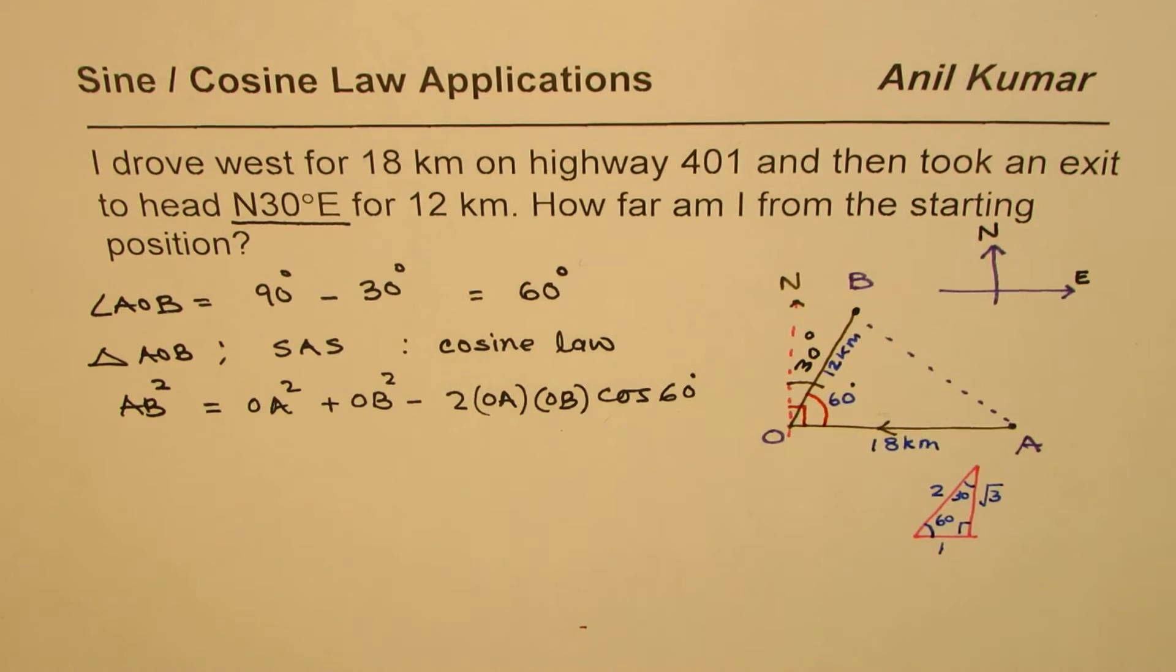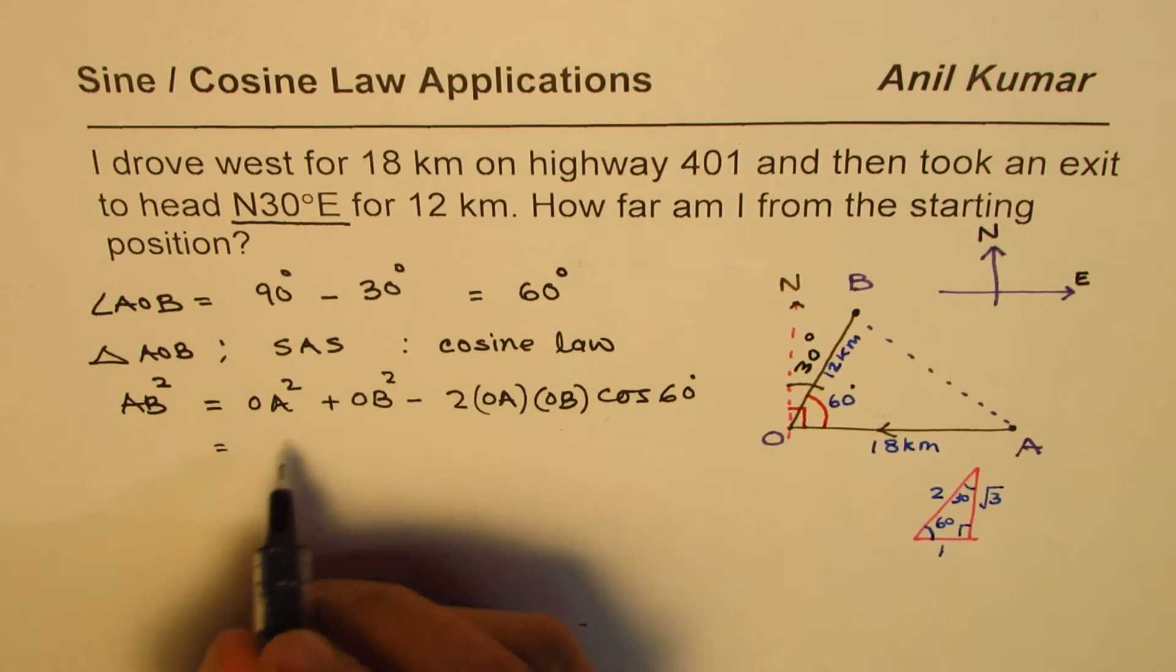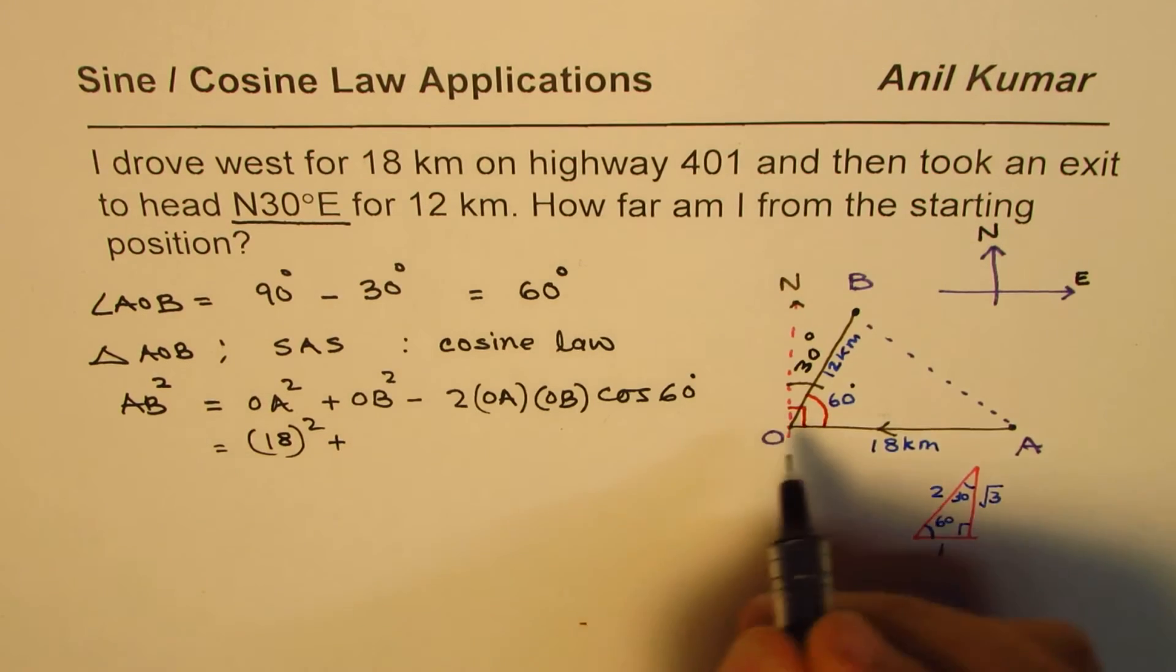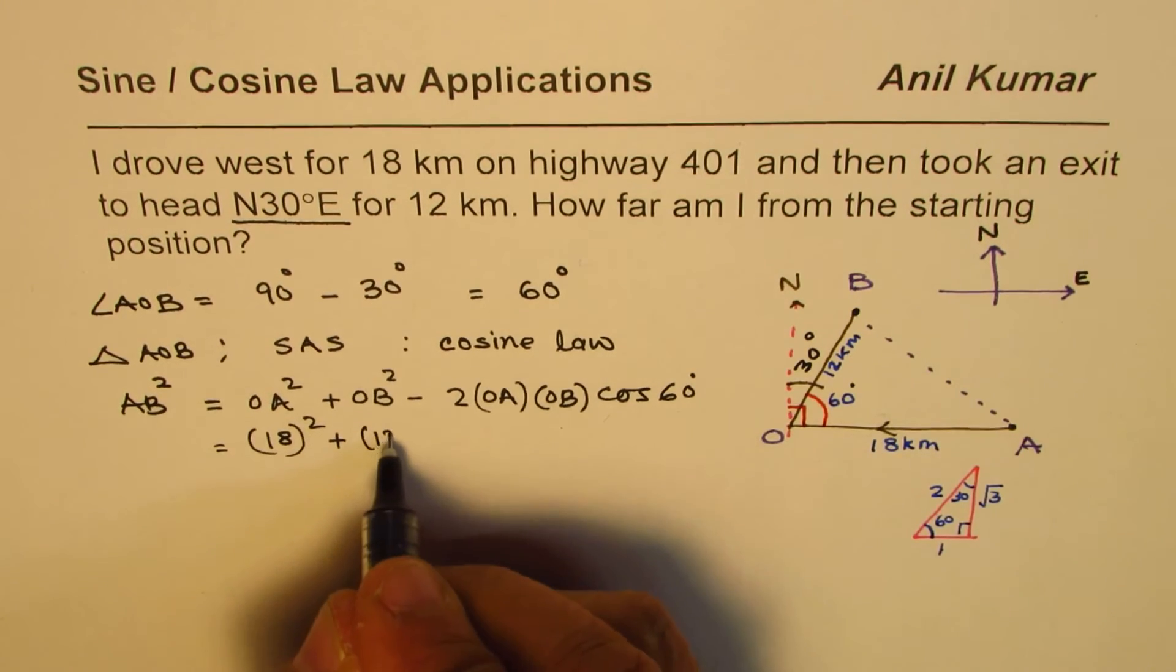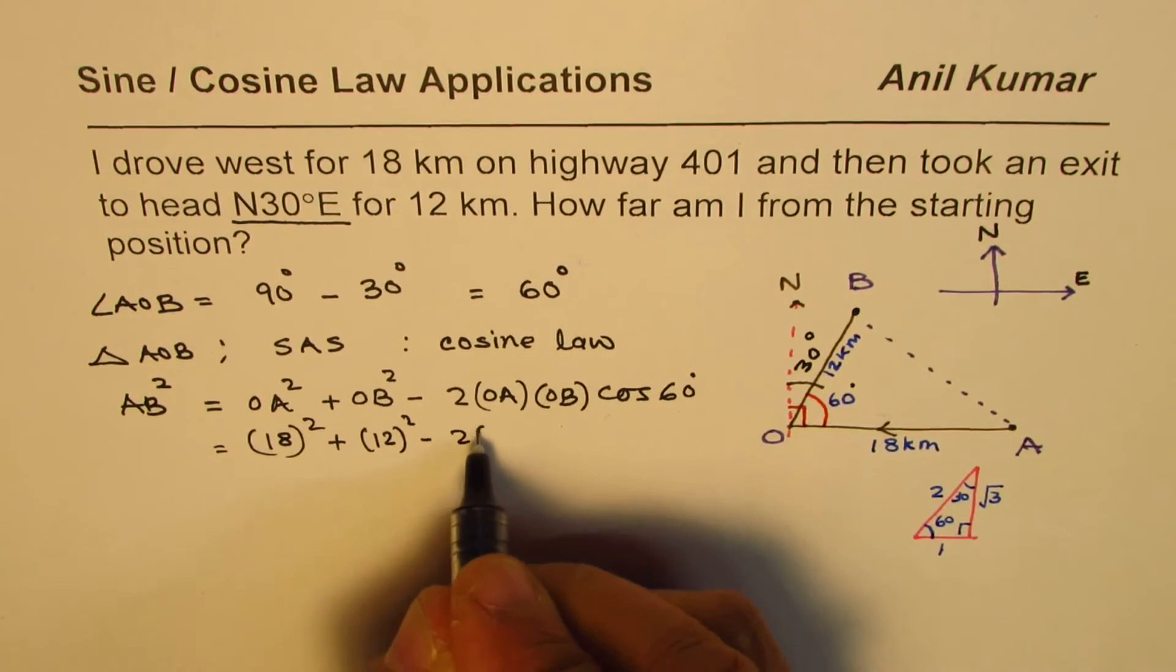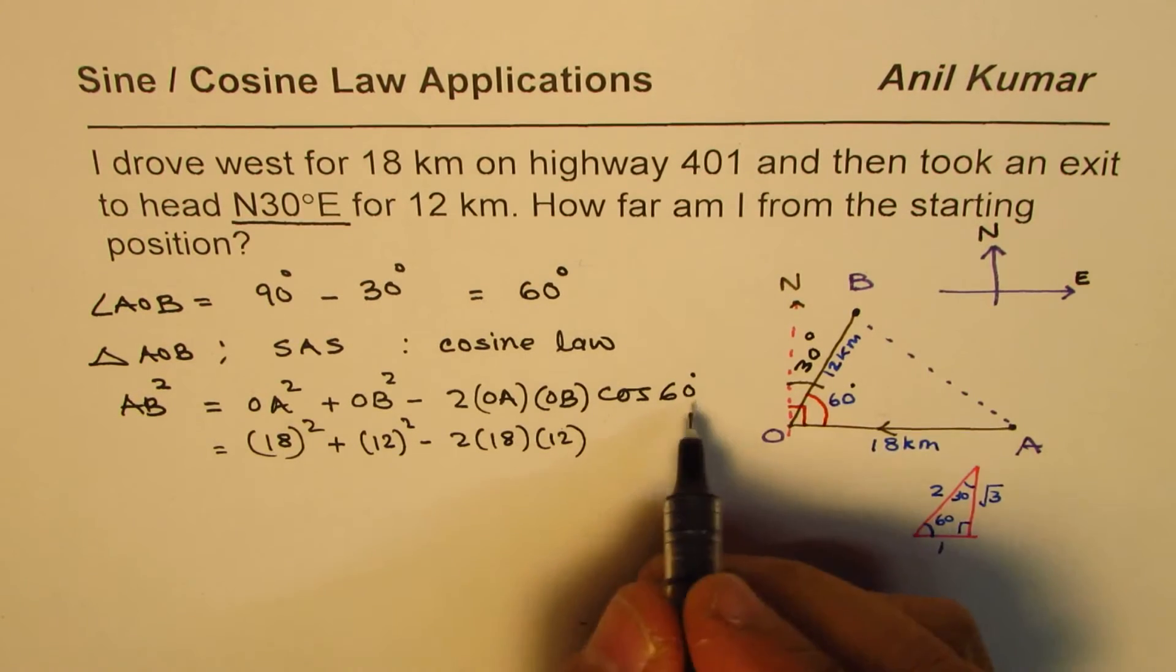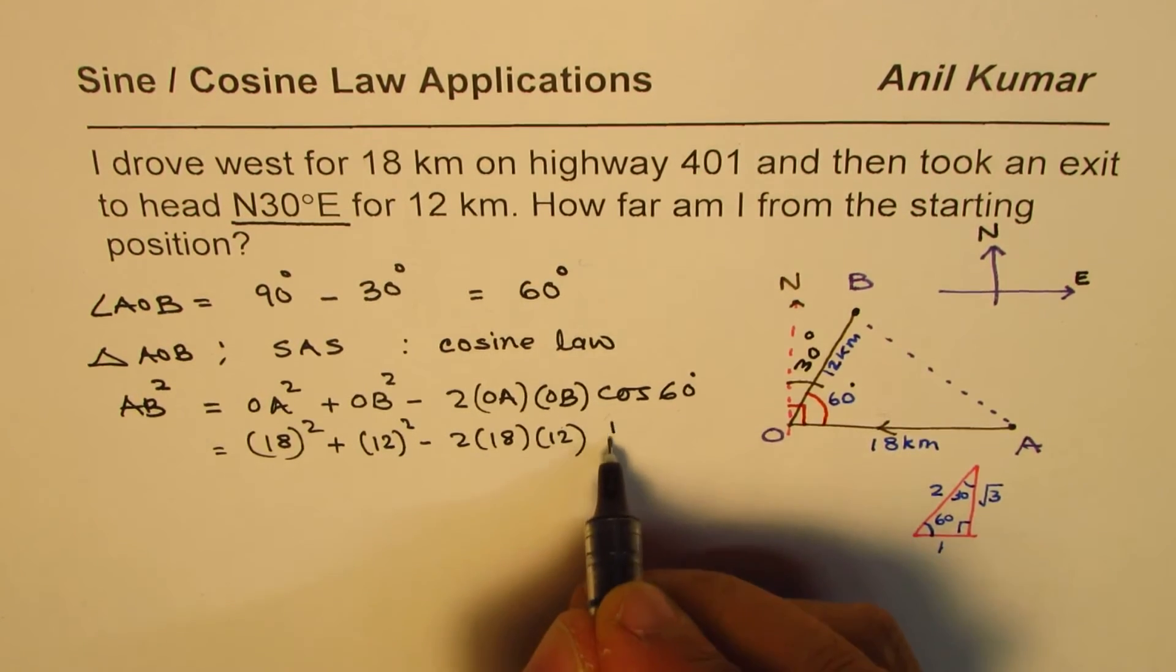Now let's substitute the values and find AB². So OA is 18, so we have 18² plus OB is 12, 12² minus 2 times 18 times 12 times cos of 60, so we're writing half for cos of 60.